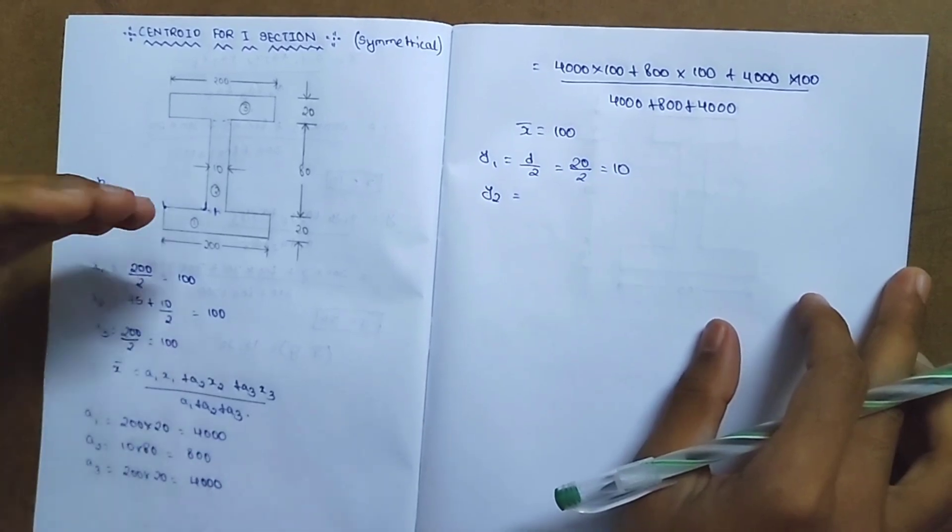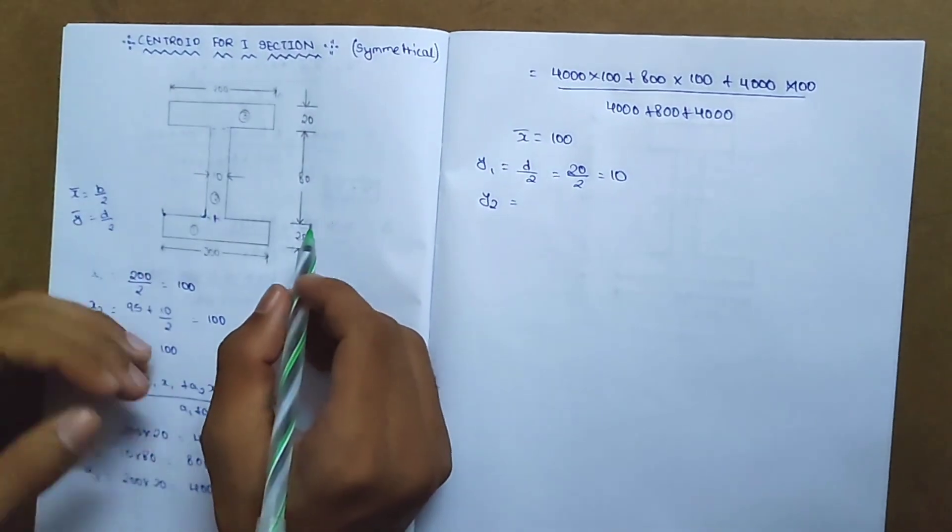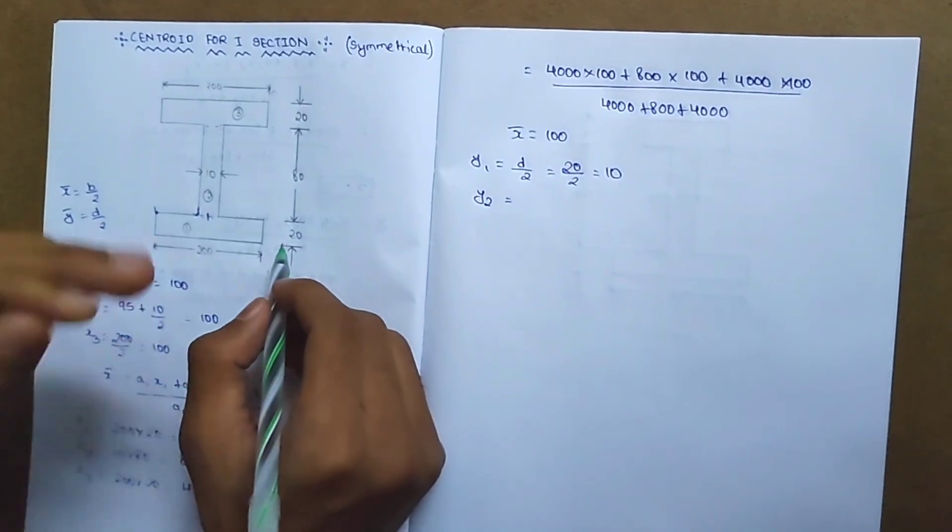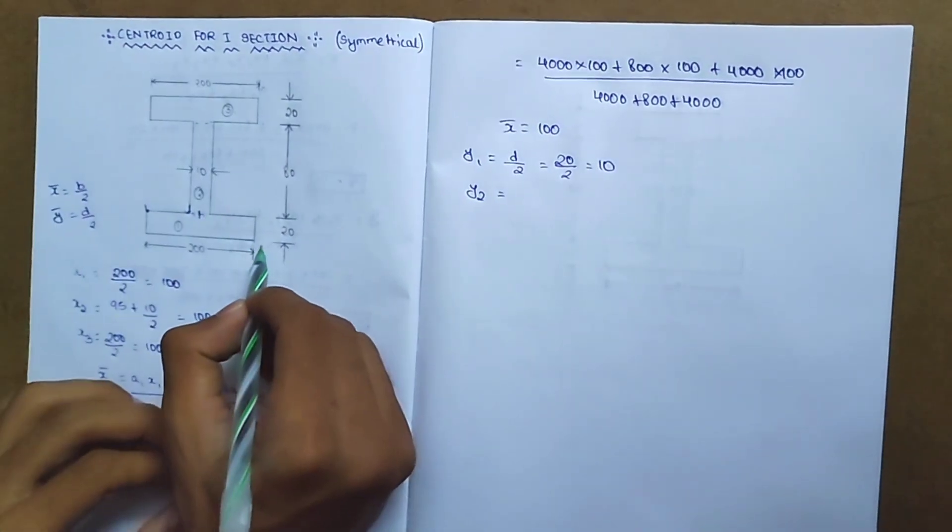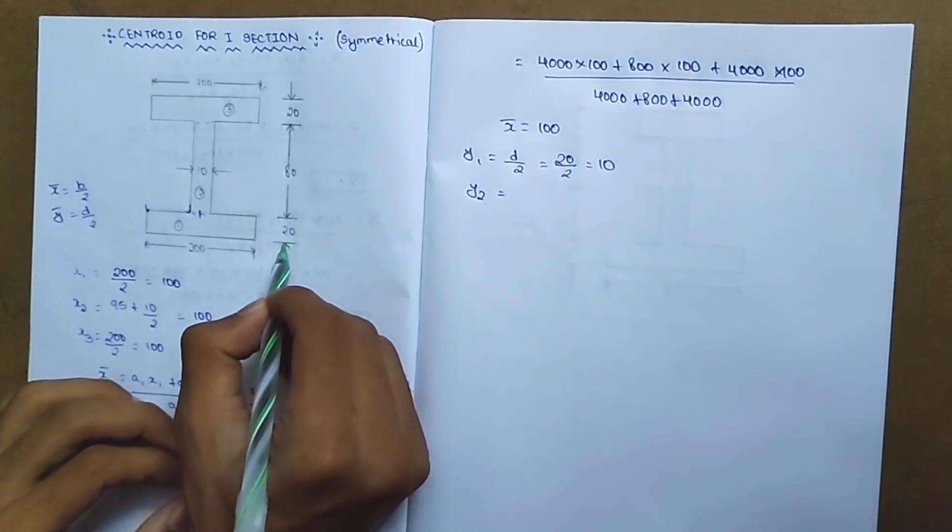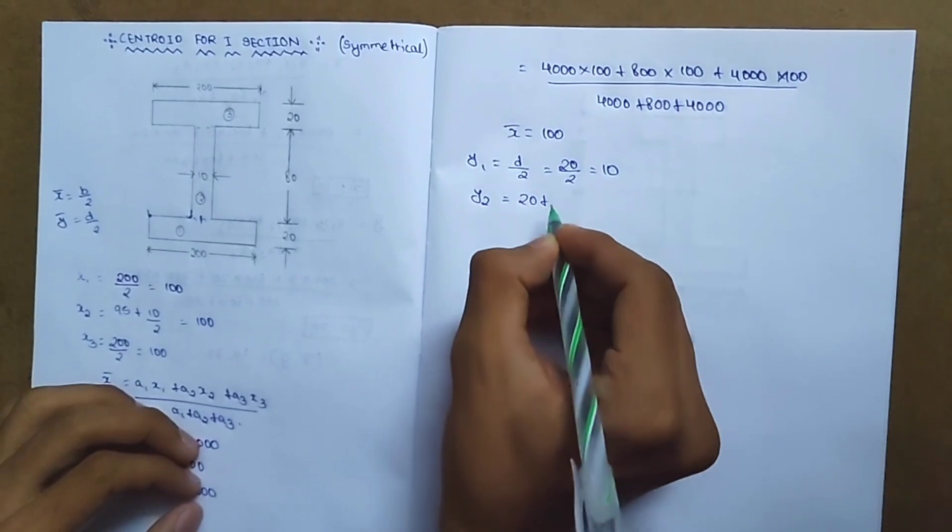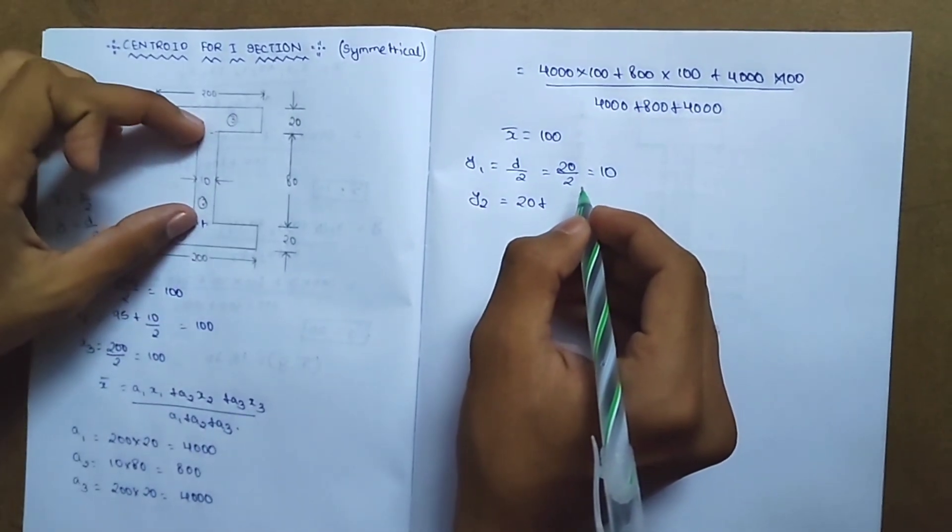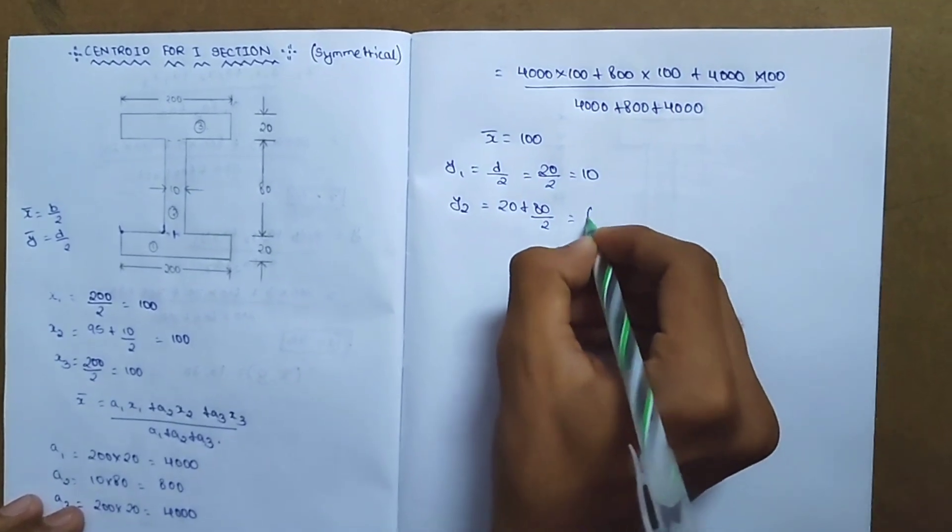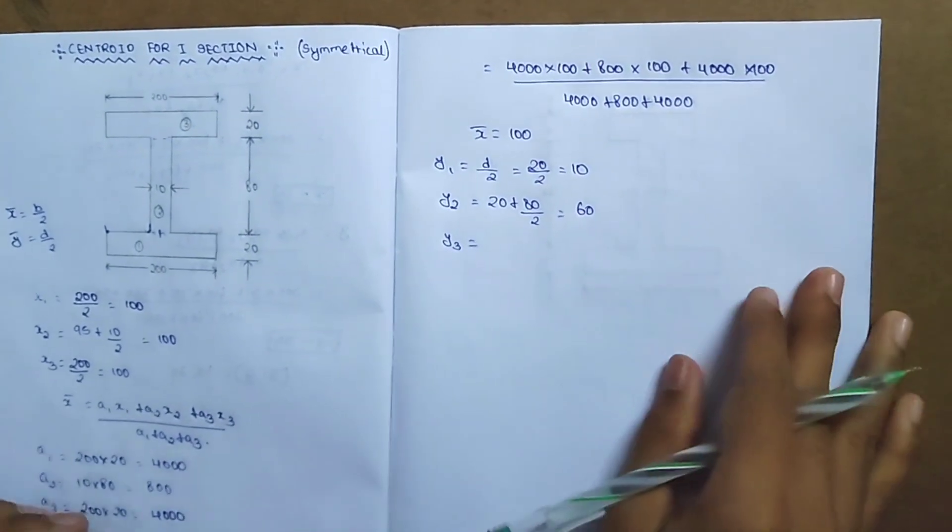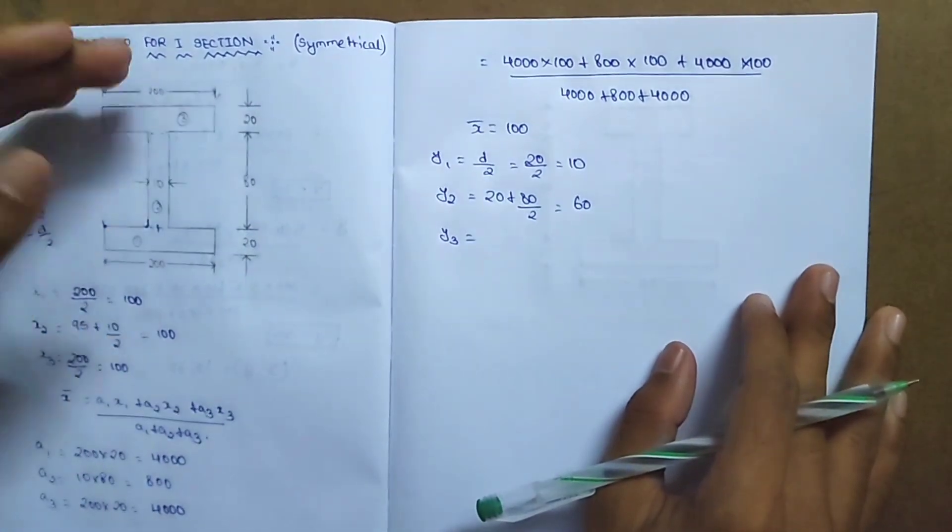y2 is calculated from the x-axis upward to the second rectangle's center. From the baseline, it's 20 plus d by 2 for the second rectangle. The depth is 80, so 20 plus 80 by 2 equals 60.